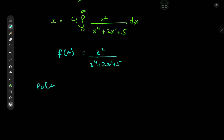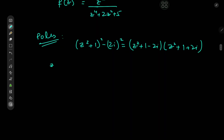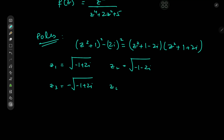We're now interested in the poles of our function f(z). We'll write the denominator again as z squared plus 1 plus 4, which means we have a nice factorization — since 4 is negative 2i squared — giving us z squared plus 1 minus 2i, times z squared plus 1 plus 2i. So the poles are: z₁ = √(−1+2i), z₂ = √(−1−2i), z₃ = −√(−1+2i), and z₄ = −√(−1−2i).